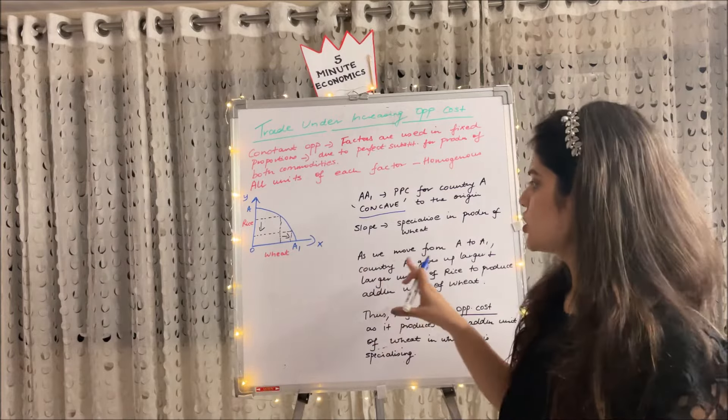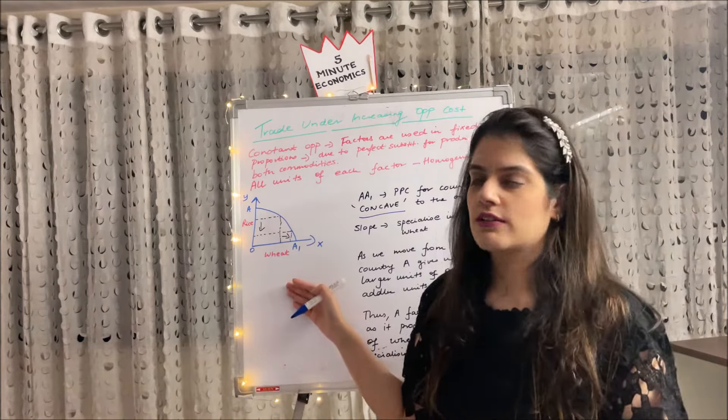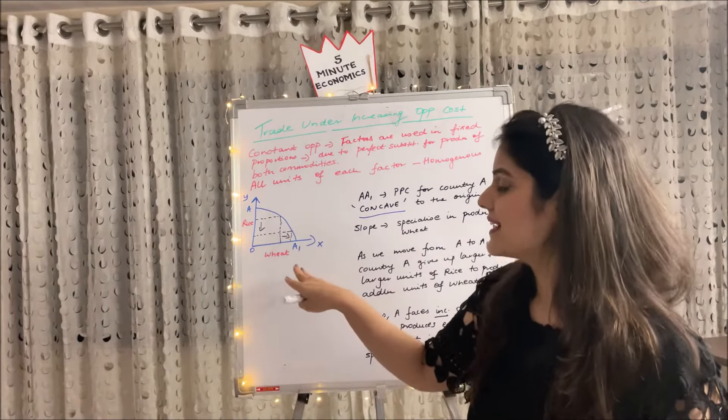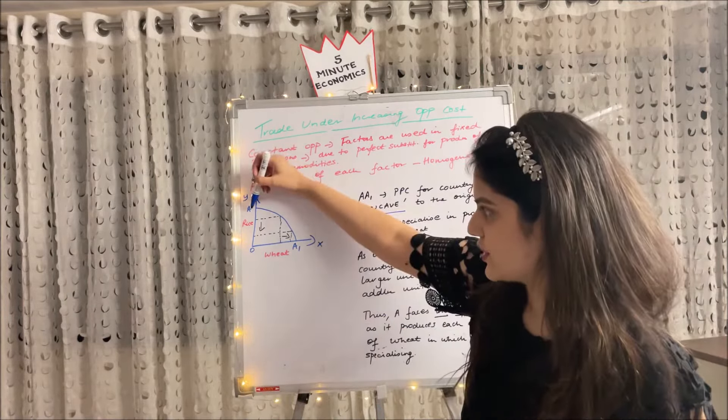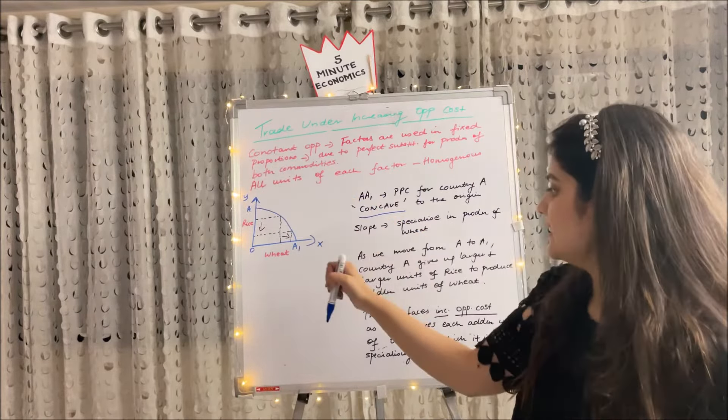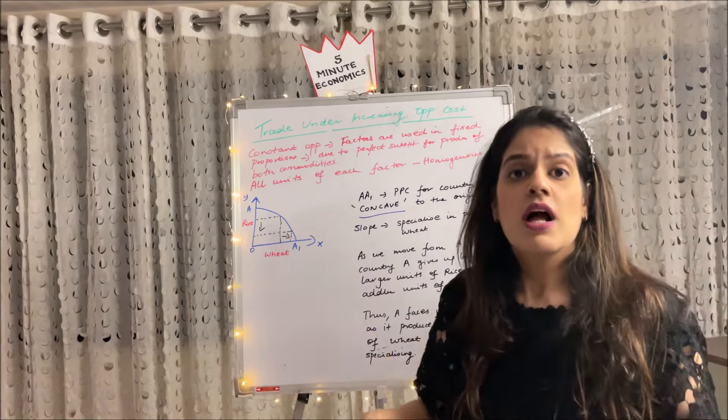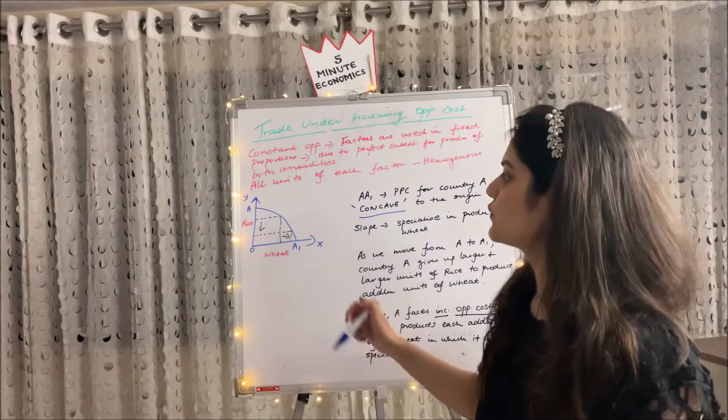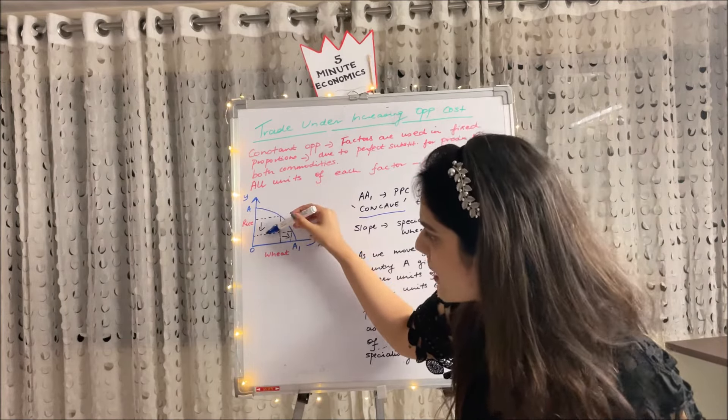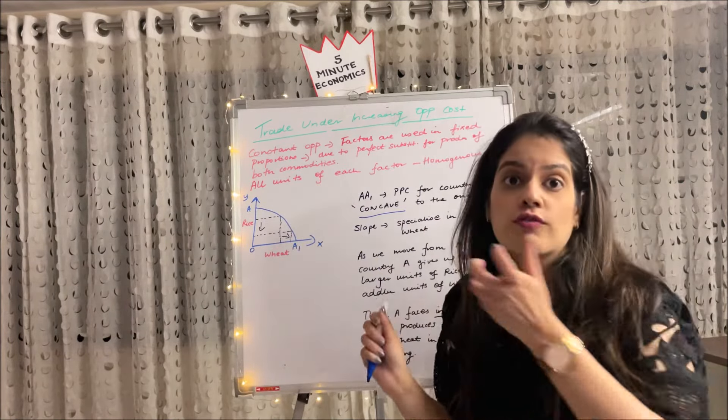The slope clearly shows that it specializes in the production of wheat, which is taken again on the x-axis and rice on the y-axis. We notice that as we move from point A to point A1 or A dash, whatever you can call it, we see that country A is giving up larger and larger units of rice to produce additional unit of wheat. You can see rice production has fallen so much to produce little more of wheat.